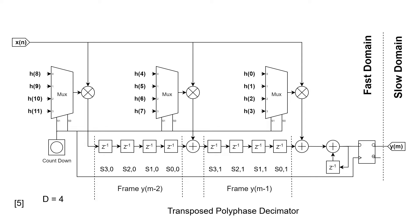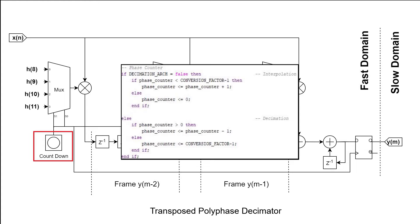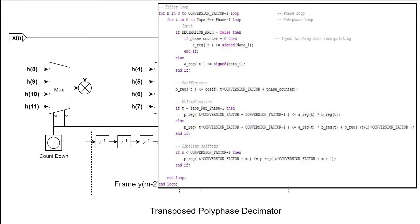Therefore, for this implementation I would like to combine both filters into a single configurable device. The implementation starts with a phase counter that is going to multiplex the filter coefficients. There are two instances of the counter, one counting up and one counting down, where the former is used for interpolation and the latter for decimation. Next, there are two nested loops, one for the filter phases and one for the taps. The first statement applies the input value to the multipliers. The actual implementation has registers before the multipliers, but this will not affect performance except for adding one sample propagation delay — this is added to shorten the path between the input and output of the multipliers.